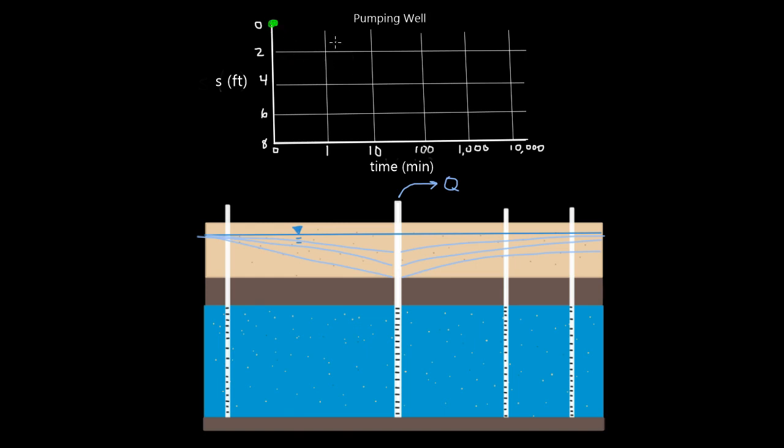So let's start the example again. At T0, we're at 0 feet of drawdown. T1, we're at 2. T10, we're at maybe 2 and a half, we'll say 3. Let me redo that. T100, 3 and a half. And let's say that's what our curve looks like 100 minutes into our test.